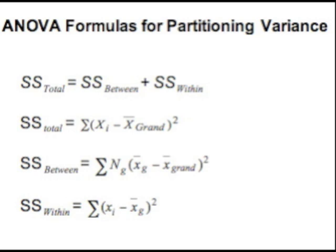The within group sum of squares refers to variation within the categorical means. For example, if group 1 has a mean of 5, variation around that mean would be accounted for by this within group variation.